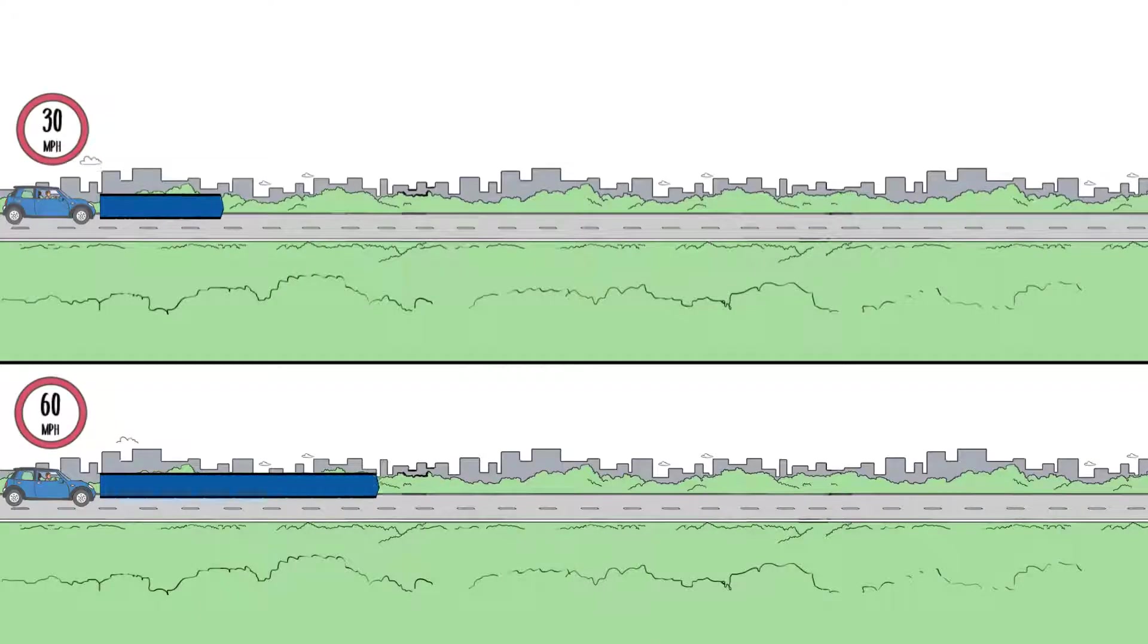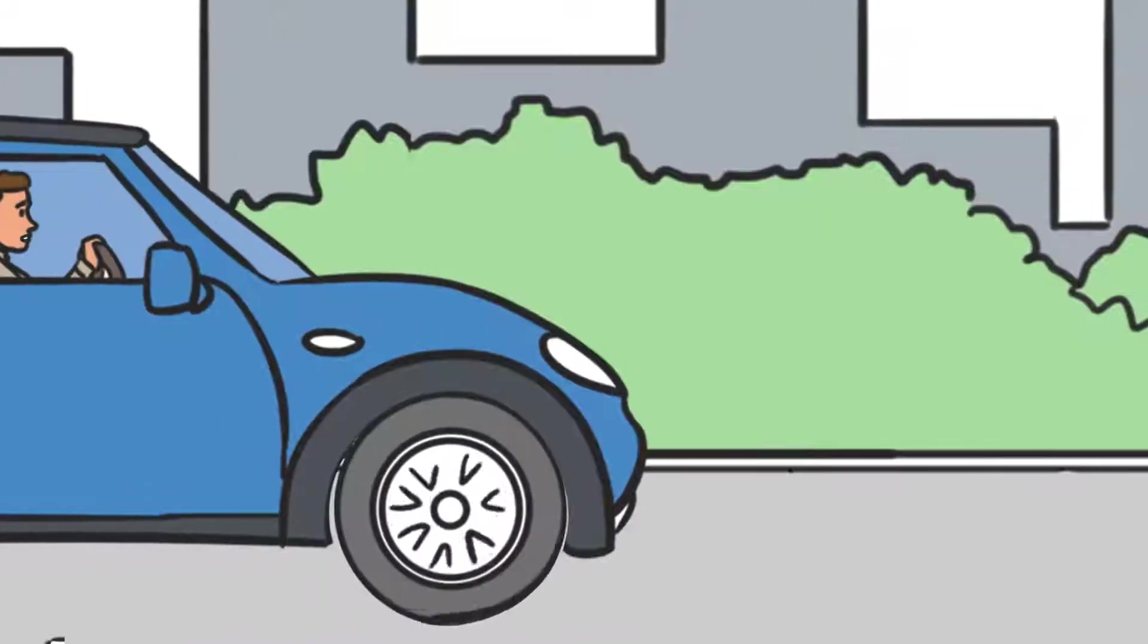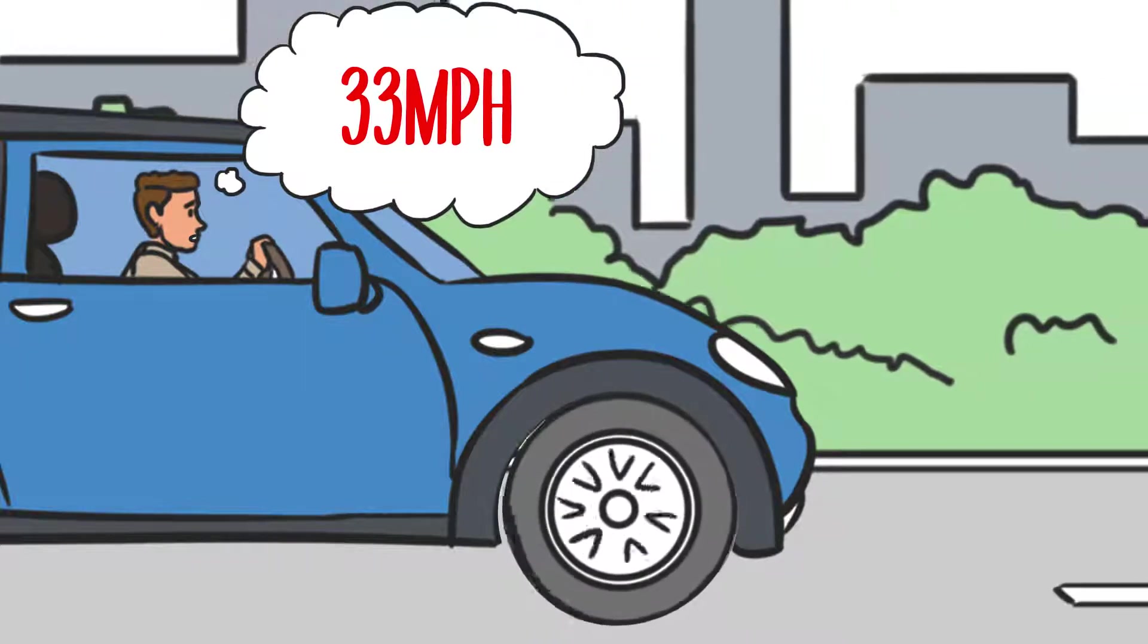How much does speed really affect stopping distance? What about an extra 5 miles per hour? Doesn't sound like much. How unsafe can it be?